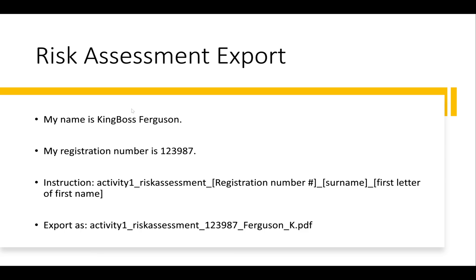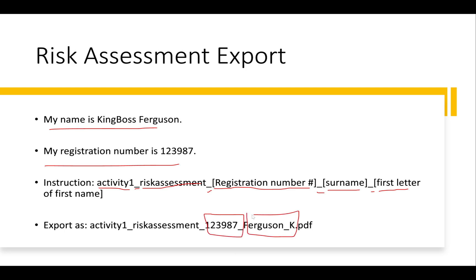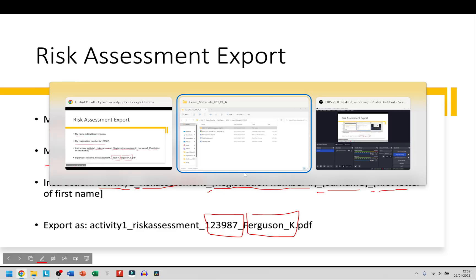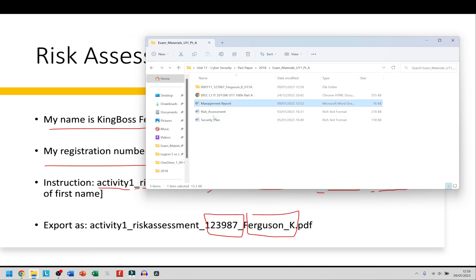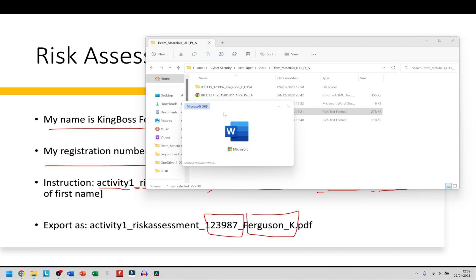Now for the individual files. The naming format — taken directly from the exam paper — is: Activity 1, underscore, Risk Assessment, underscore, registration number, underscore, surname, underscore, first letter of first name, dot PDF. All you really need to change is your registration number and your name. For me it's: Activity 1, underscore, Risk Assessment, underscore, my number, underscore, my name, dot PDF.